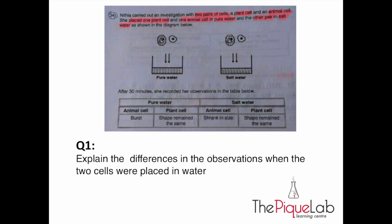Going back to the question, I want you to take note of one of the key words in the question itself. It is observations. And what do observations mean? Observations are what you can see. So what can we see from the results of this experiment? The animal cell burst while the plant cell remain the same. And we want to ask ourselves now, what is the difference between the animal cell and the plant cell that caused the difference in the observations as seen in the diagram?